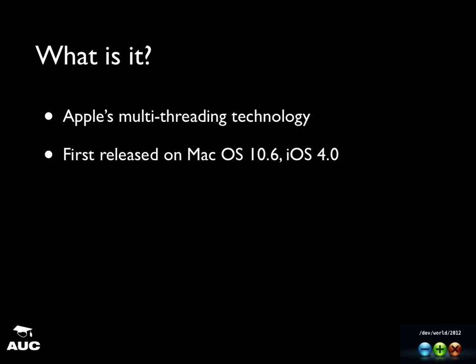So it's a low-level C API. There are Objective-C wrappers around it, but Apple recommends you use the C API — it's not very difficult to use. It's actually open source. If you go to libdispatch.macosforge.org, you can download the source code. There are a few forks for Linux, Unix, and OpenBSD, and a couple of forks for Windows as well, but I'm told they're not very good.